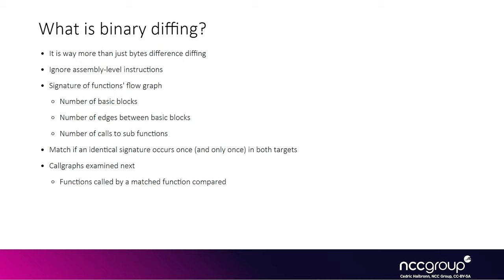Binary diffing looks at the number of basic blocks rather than the actual instructions, since we're more interested in whether a new basic block was added or removed, indicating a significant change in the function logic. It also looks at relationships between functions: if a function calls three other functions, we can assume the same is true for both the pre-patch and post-patch file, allowing those three functions to be matched even if a new function was added earlier and shifted them all. We can then apply the same algorithms recursively to newly matched functions.